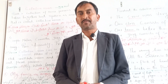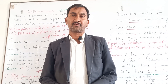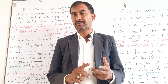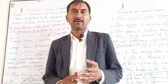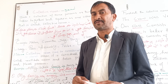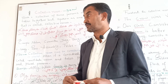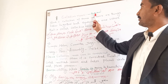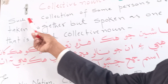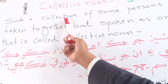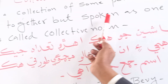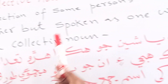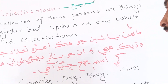Collective Noun is a type of common noun. Nouns include common noun, proper noun, abstract noun, material noun, and collective noun. A collective noun is a collection of some persons or things taken together but spoken as one whole.